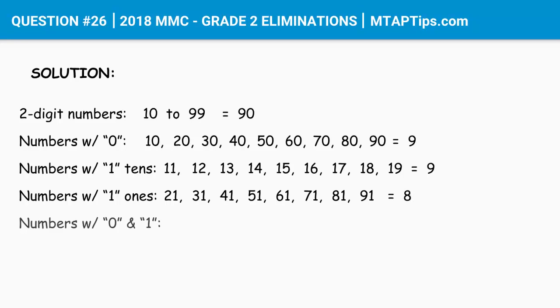Now, to know the numbers with 0 and 1, we'll just have to add 9 plus 9 plus 8 is equal to 26.